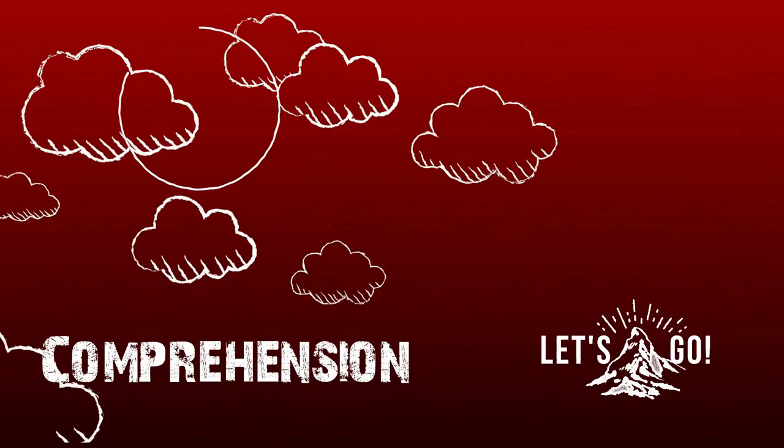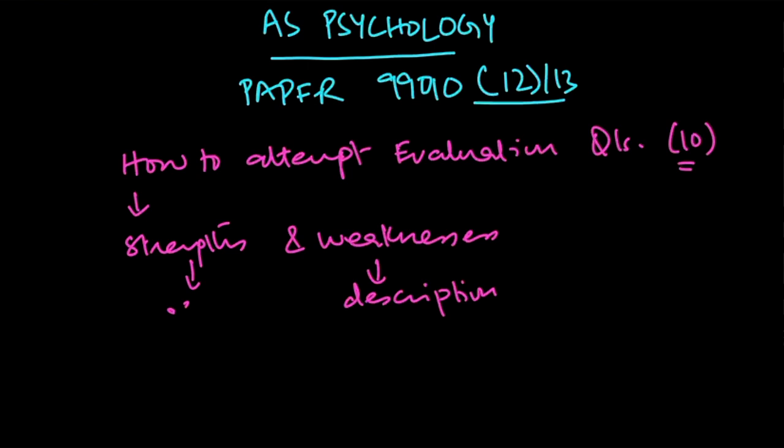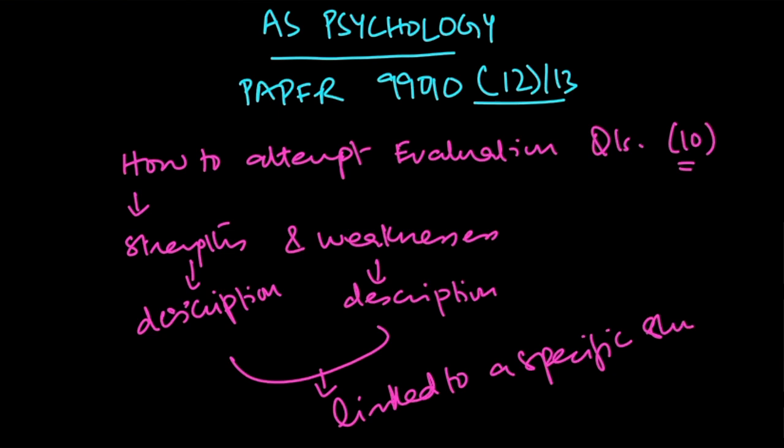Welcome to MassGenius. Today we will be discussing a very important topic: how to attempt a 10-mark question in the AS Psychology paper, the new revised syllabus 990 CDLI 12, 11, or 13. We have to write the strengths, weaknesses, and their description, and that description should be linked to a specific study.